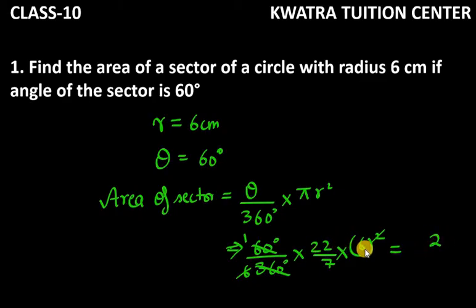You have to multiply 22 and 6, and at the bottom you will have 7 only. So this is 132 over 7 cm square. This is the area of sector for question number 1.